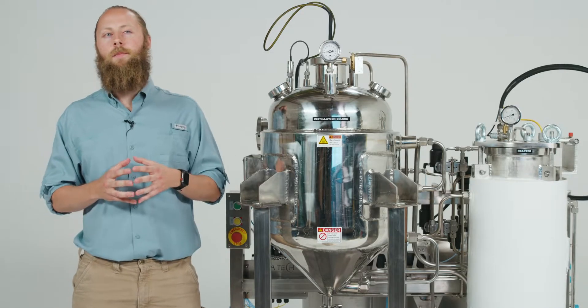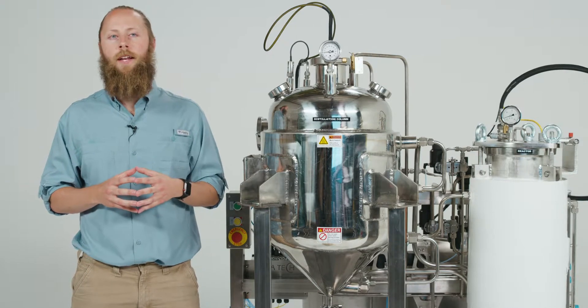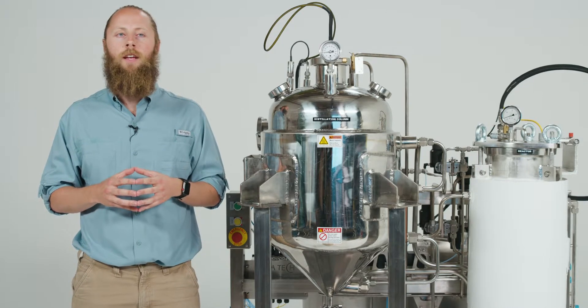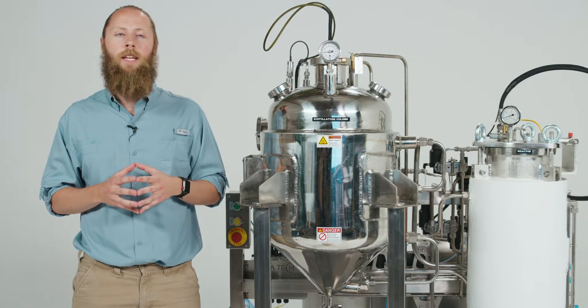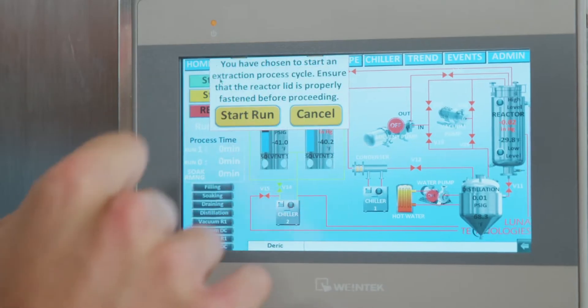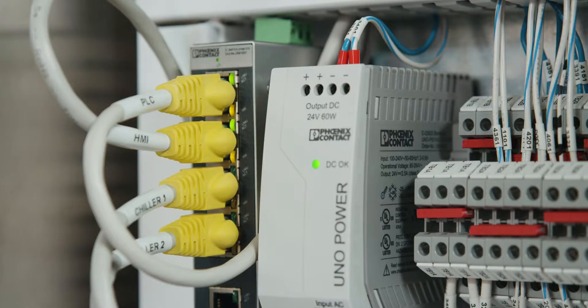When you're processing cannabis, it's important to make sure the quality of flour is carried all the way through to the product that ends up on the dispensary shelf. And with hydrocarbon extraction, there's a lot to be lost and a lot to be gained in terms of product quality. That's why precise control of the extraction process is crucial to any extractor.